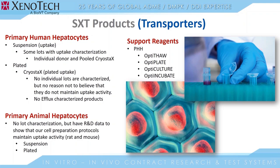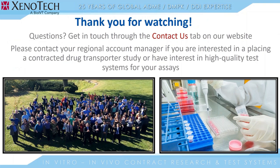Aside from the many drug transporter services that we offer as studies, we also offer a number of products that you can purchase to conduct transporter studies within your own lab. These include test systems such as primary human hepatocytes, either in suspension or plated, and also primary animal hepatocytes. Along with the test systems, we also offer numerous support reagents to go along with these. Thank you very much for watching today. If you have any questions, please get in touch with us through the Contact Us tab on our website. Please contact your regional account manager if you're interested in placing a contracted drug transporter study.